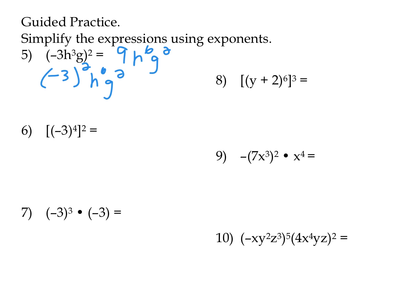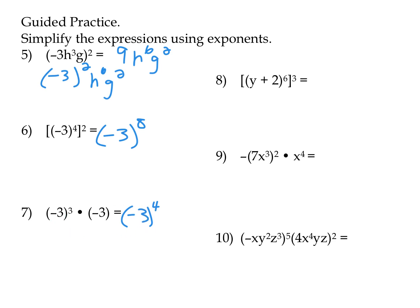Number 6: parentheses are important here. We want negative three as the base in parentheses to the eighth power. We have a power raised to another power, so we multiply them together — 4 times 2 gives the eighth power. Number 7: again, parentheses are important. Negative three to the fourth power. There's an exponent of one on the base, so adding like-base exponents gives negative three to the fourth power.